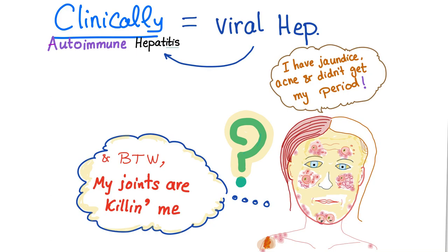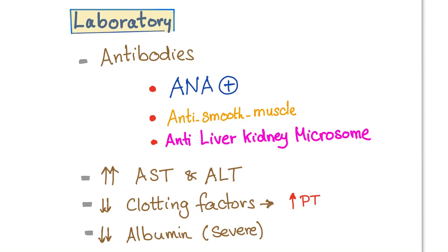The symptoms clinically resemble viral hepatitis: we will have jaundice, but in autoimmune hepatitis we also see acne and amenorrhea for an unknown reason. Additionally, patients present with arthralgia — joint pain — where 'arthro' means joint and 'algia' means pain.